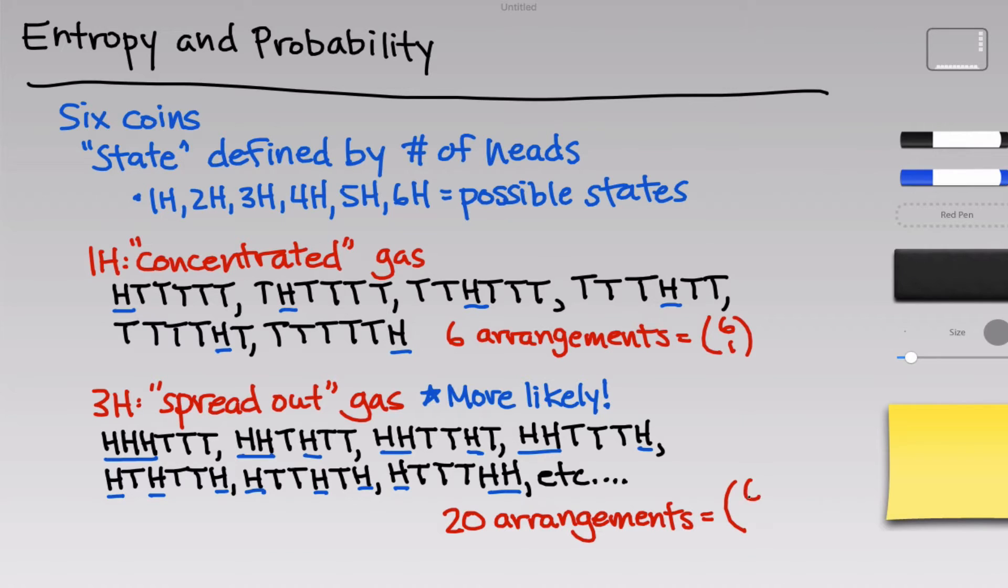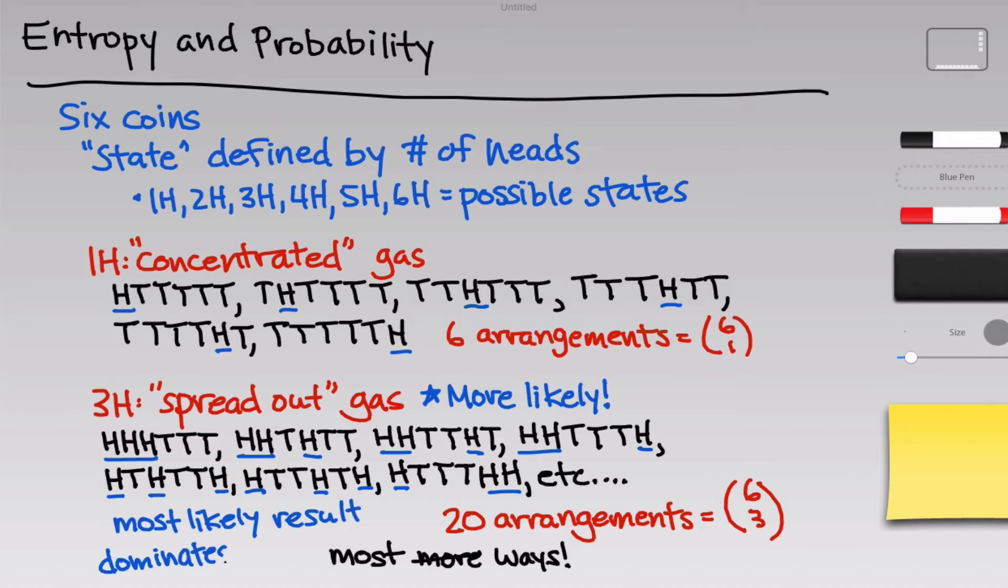So indeed, by comparing the one head state to the three head state and looking at the combinatorics, we've shown that there are more ways to generate the three head state than the one head state, 20 versus six. If we looked at this for all of the different possible numbers of heads, one, two, three, four, five, and six, we would realize that the three head state has the largest number of possible arrangements that generate it. So when we flip the six coins randomly, three heads is going to be the most common result. In the language of thermodynamics and entropy, we can say that the three head state will dominate over time.